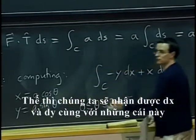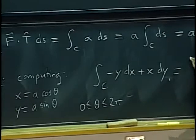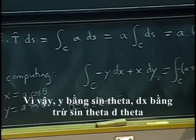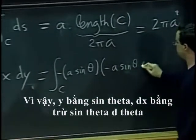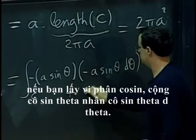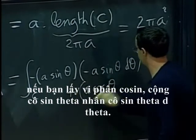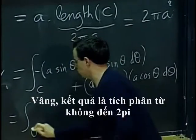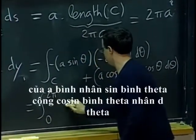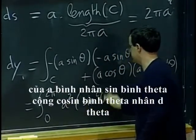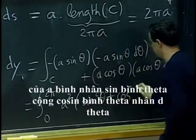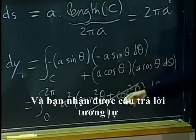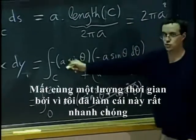So then we would get dx and dy out of these. So y is a sine theta, dx is negative a sine theta d theta, if you differentiate a cosine plus a cos theta, a cos theta d theta. You will just end up with integral from 0 to 2 pi of a squared times sine square theta plus cosine square theta d theta. That becomes just one. And you get the same answer.